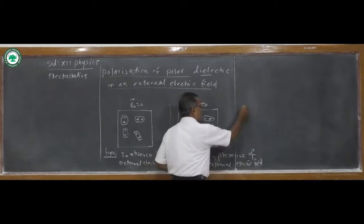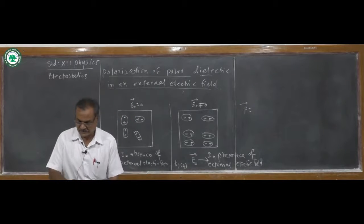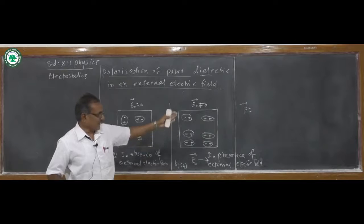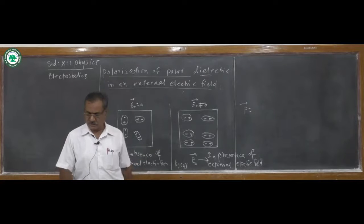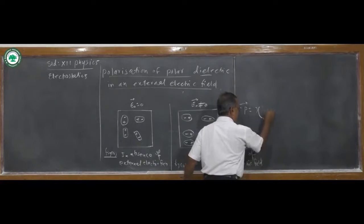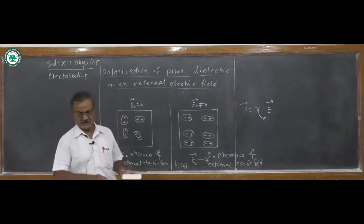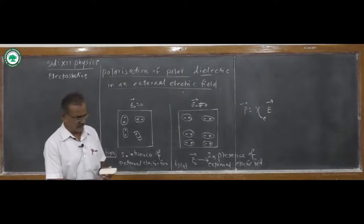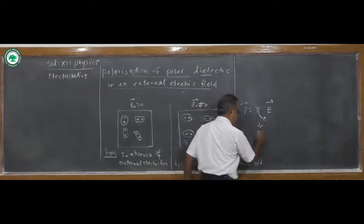Polarization is denoted by the letter P. Dipole moment per unit volume is called polarization. For linear isotropic dielectrics, the dipole moment of the substance equals P = χE, where χ (psi) is the electric susceptibility of the dielectric material. It has different values for different dielectrics, and for vacuum, χ electric is zero.